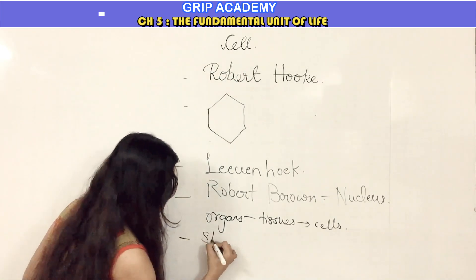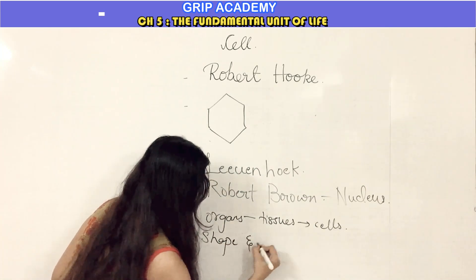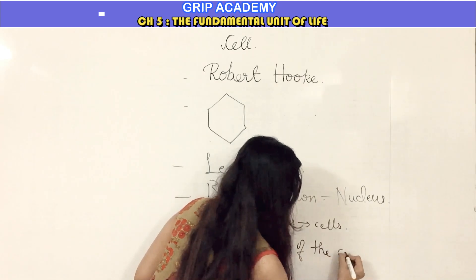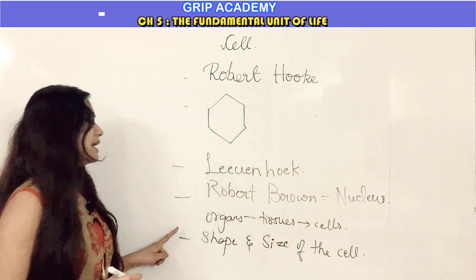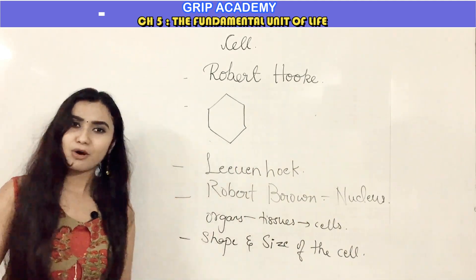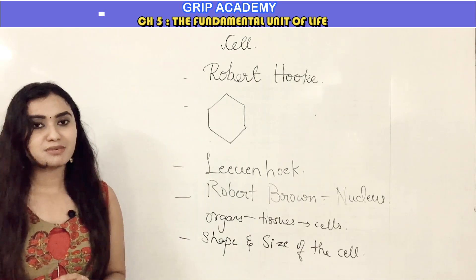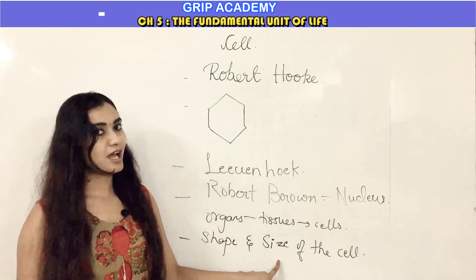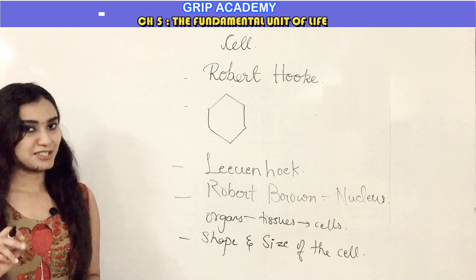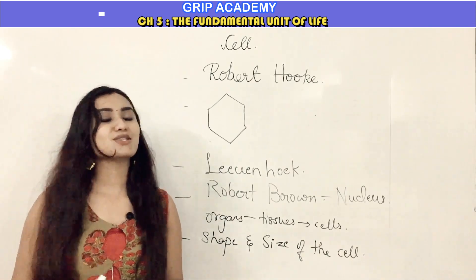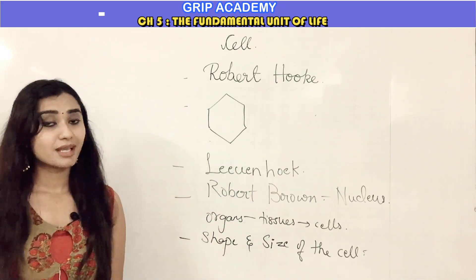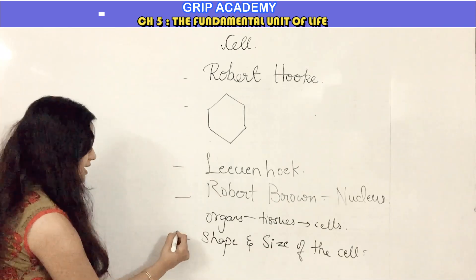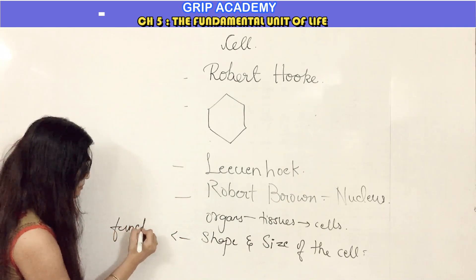The next topic is about the shape and size of a cell. Do you think all cells in living organisms have the same shape and size? The answer is no — the shape and size of a cell depends upon the function it performs.